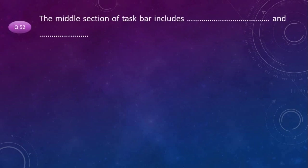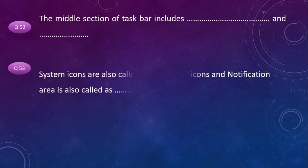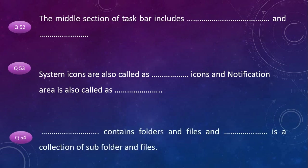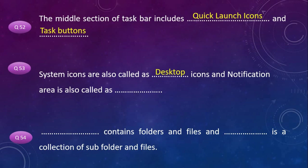The middle section of the taskbar includes quick launch icons and task buttons. System icons are also called desktop icons, and the notification area is also called the system tray. Drives contain folders and files, and a folder is a collection of subfolders and files.